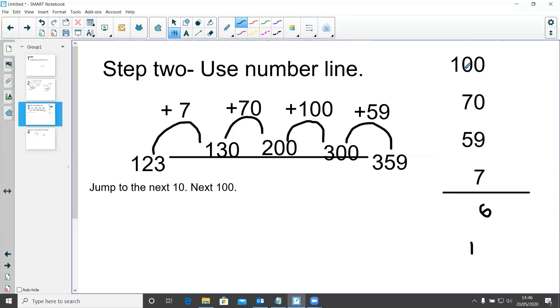Look at my tens column. 7 add 5 is 12. Don't forget my 1 down the bottom is 13. Carry my 1, and then 1 add 1 is 236.